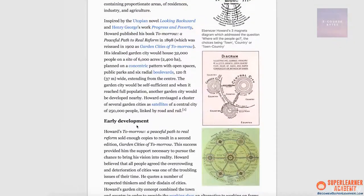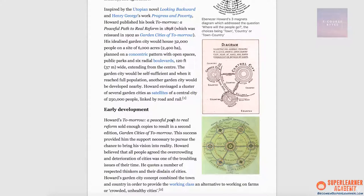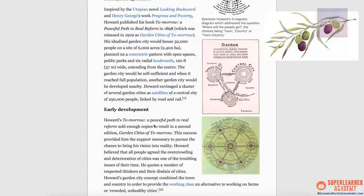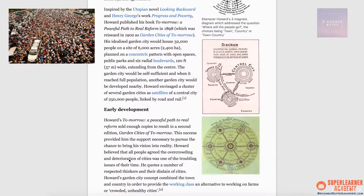Let's jump into early development. Howard's 'Tomorrow: A Peaceful Path to Real Reform.' For 'peaceful path,' I picture an Israeli and Palestinian flag — my personal marker for reform and peace, because it's a highly emotionally poignant point to me. But you might picture an olive branch. Another one of his books, 'Garden Cities of Tomorrow,' brings me back to the same marker of Rothschild Boulevard. But I immediately jump to 'overcrowding and deterioration.' For overcrowding, I see a huge square of people pushing and shoving in complete chaos.